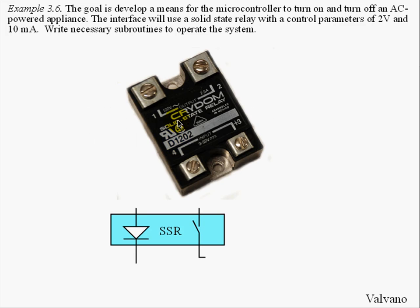In this example, we will use a solid state relay to allow the microcontroller to turn on and off an AC-powered appliance. A solid state relay has two terminals of input, shown here on the device, modeled as a light emitting diode in the circuit. If current flows through this diode, then the switch — these two pins here — will be connected.